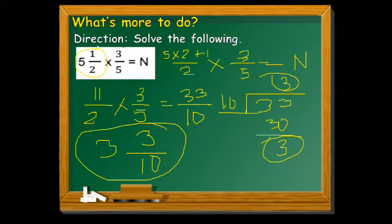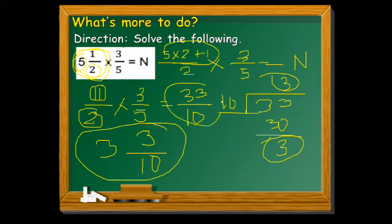Always remember: when you have a mixed fraction, first change the mixed number to an improper fraction by multiplying the whole number by the denominator and adding the numerator. Once they are both improper fractions, multiply the numerators and multiply the denominators. When the result is an improper fraction, divide the numerator by the denominator to get the simplest mixed number form. Check if it can be simplified further.